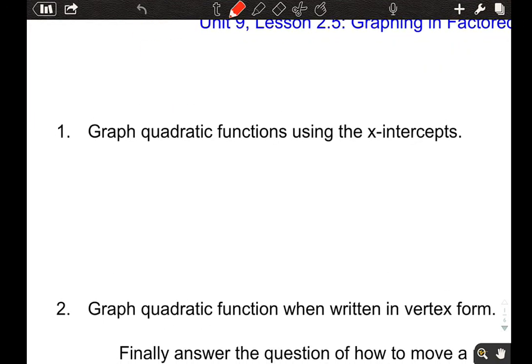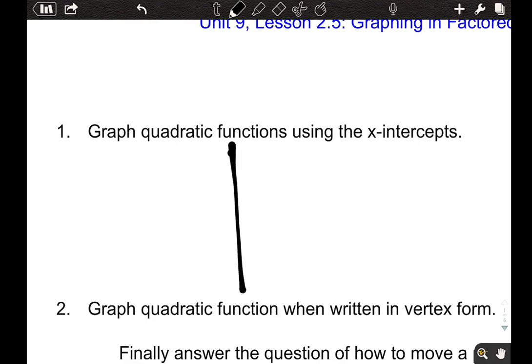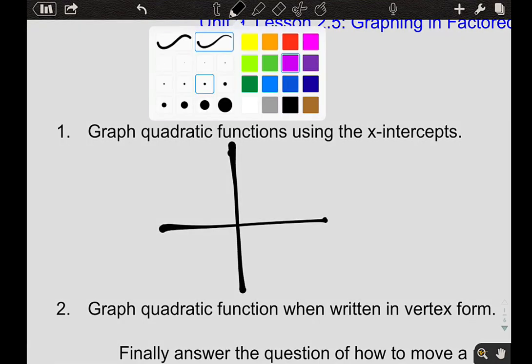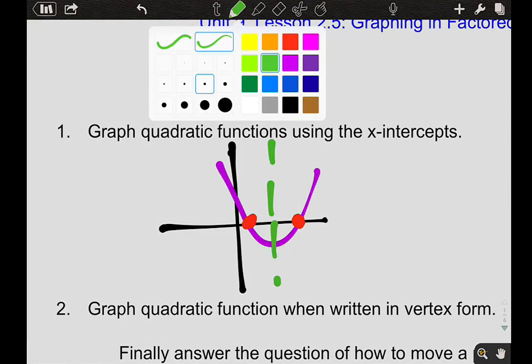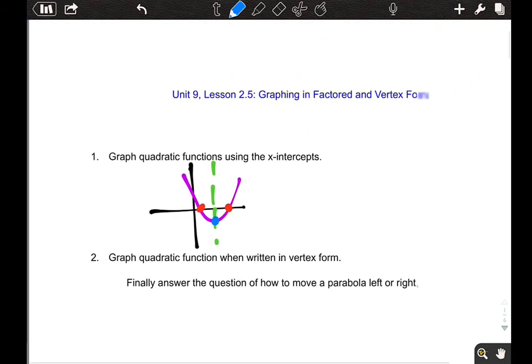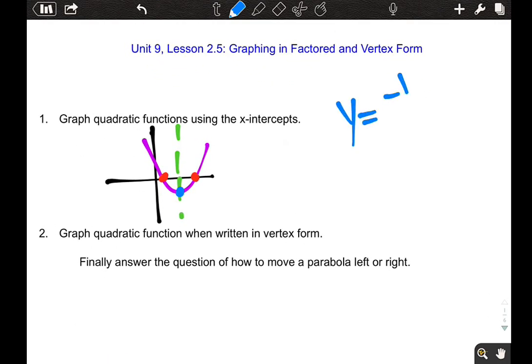We're going to start by graphing quadratic functions using the x-intercepts. So basically what this means is it harnesses the fact that parabolas are symmetrical. So if I know this is my x and y coordinate plane, and I know the parabola's here, if I can figure out maybe from the equation where these two x-intercepts are, then I could also figure out the axis of symmetry, and I could also figure out the vertex.